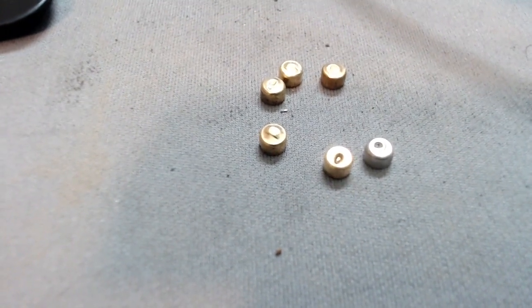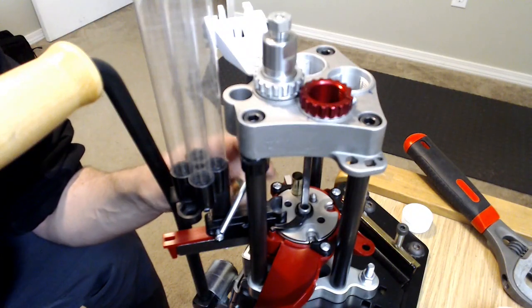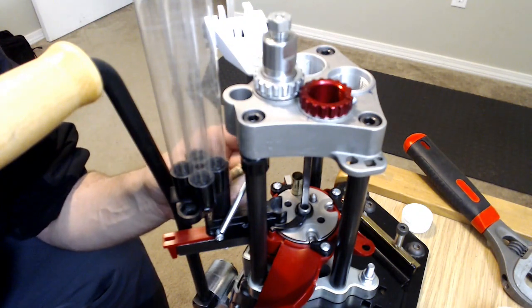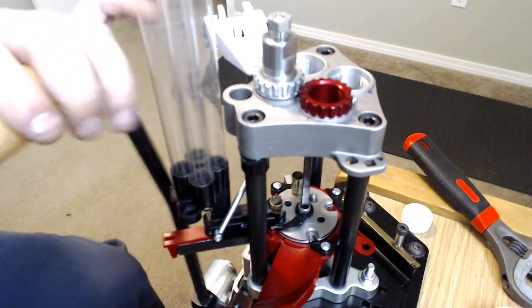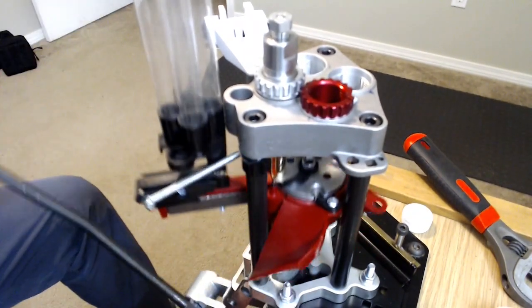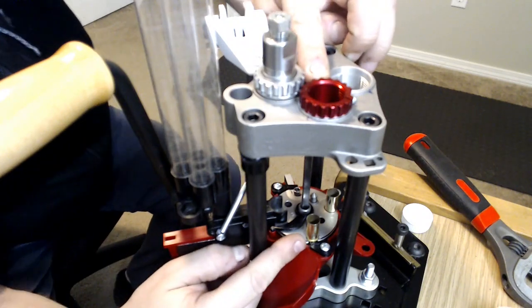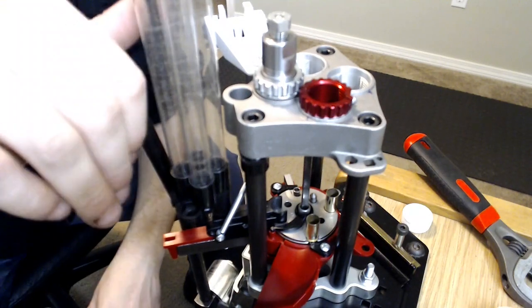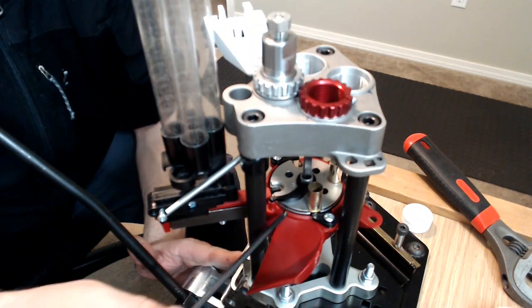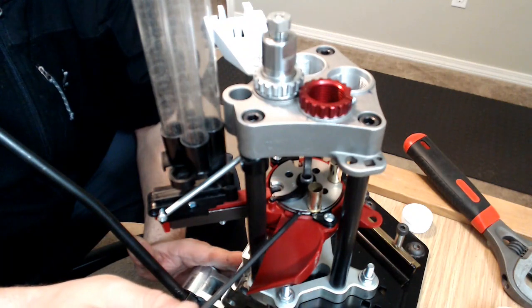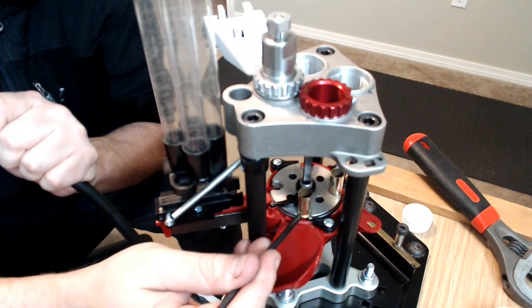And that would cause the primer to lock the shell casing into the shell plate. So what was happening was the primer wasn't getting fully ejected out the bottom. And it basically would lock the shell into place as it would cycle around.